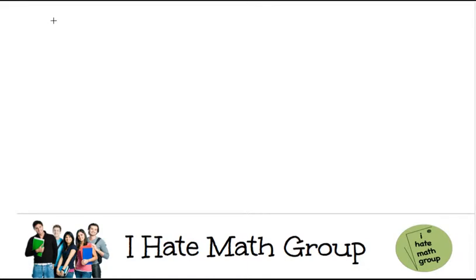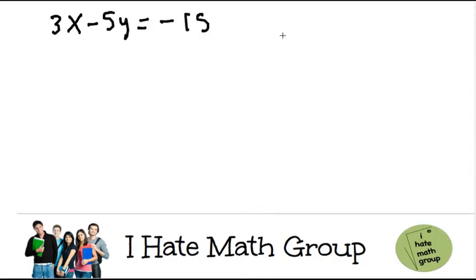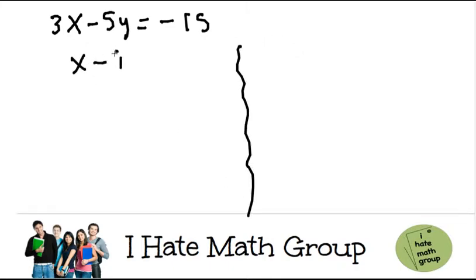Hi guys, welcome back. So here we have 3x minus 5y equals negative 15, and they want me to find the x and the y-intercept. So let's go ahead and do the x-intercept.